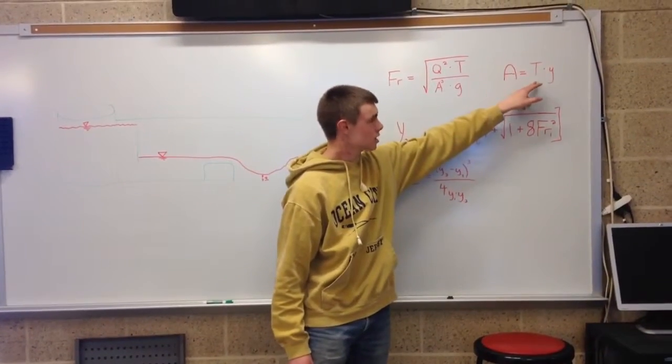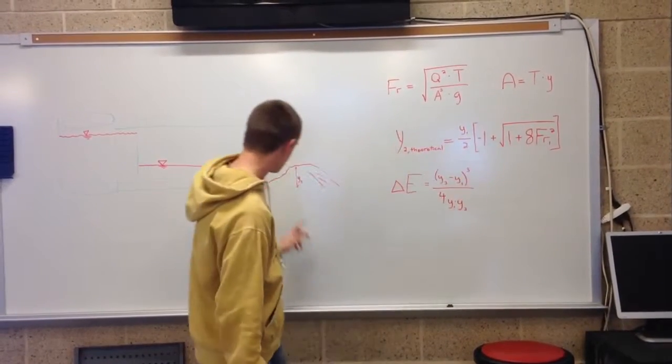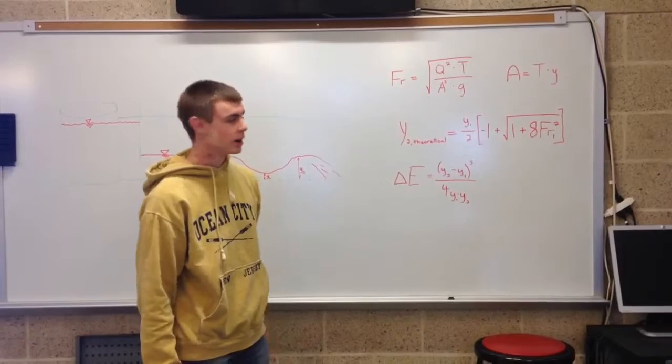And your A is actually your top width times your y value, whether it's 1 or 2, depending on what Froude number you're calculating.